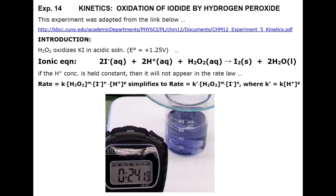The reference to where this procedure came from is given. Looking at the reaction equation and the rate equation, you can see that the rate of the reaction is a function of hydrogen ion concentration as well as iodide and peroxide. To eliminate the variation due to hydrogen ion, all reactions are run at a constant pH of 2.